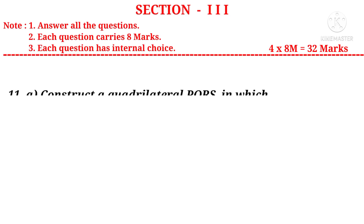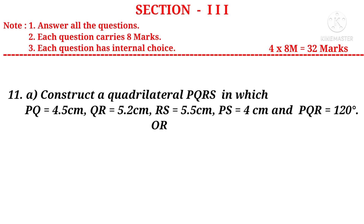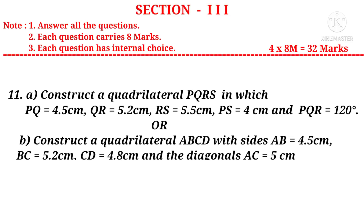Eleventh A: Construct a quadrilateral PQRS in which PQ equals 4.5 centimeters, QR equals 4.5 centimeters, and angle PQR equals 120 degrees. Eleventh B: Construct a quadrilateral ABCD with sides AB equal to 4.5 centimeters, BC equal to 5.2 centimeters, CD equal to 4.8 centimeters, and diagonals AC equal to 5.5 centimeters and BD equal to 5.4 centimeters. Both questions are from Chapter 3, Construction of Quadrilaterals.